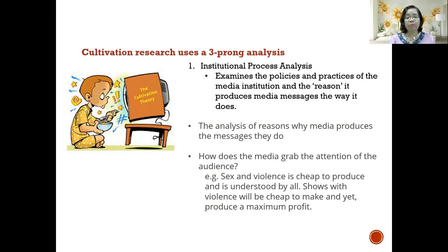Cultivation research uses a three-pronged analysis. The first is the institutional process analysis, which examines the policies and practices of a media institution and the reasons it produces media messages the way it does. This level of analysis looks at specific media outlets — for example, ABS-CBN, Rappler, CNN — and examines where they're coming from and how they approach their programming.